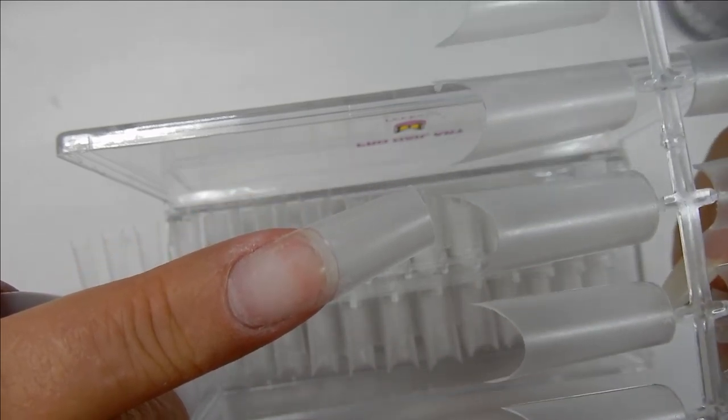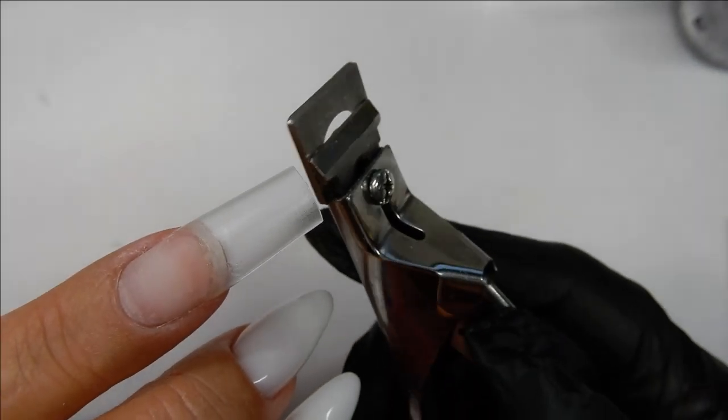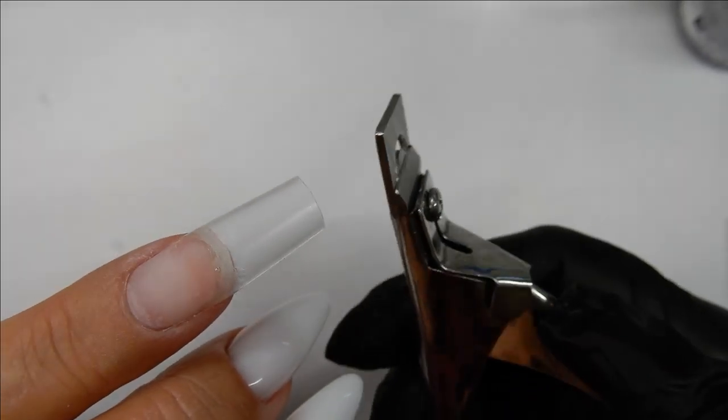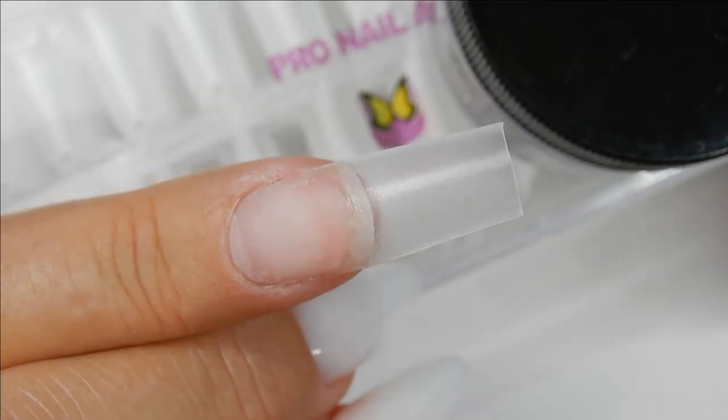So what you need to do is just size up the tip that fits you and glue it on. You just get your tip cutters out and then you trim the tip to the length that you like, and I've already done that as you can see.